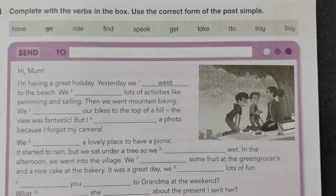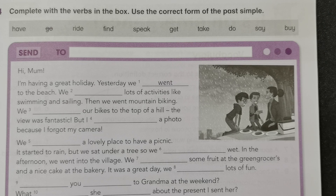Okay pupils, we are on the Year 6 academic science workbook page number 7. So this is Activity 4: complete with verbs in the box, use the correct form of the past simple. So you will see some of these irregular verbs. You may refer to the last page of this workbook.